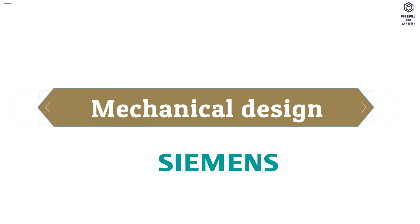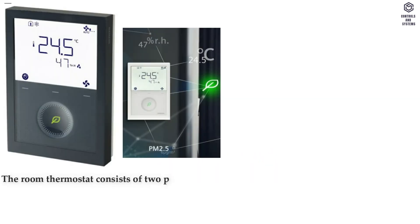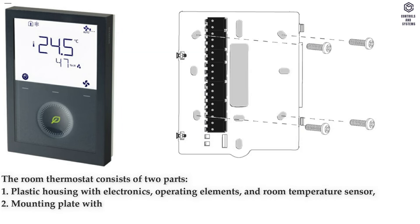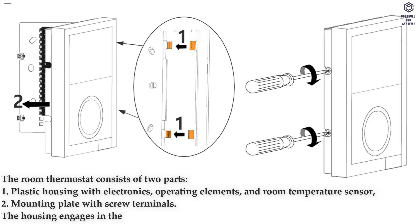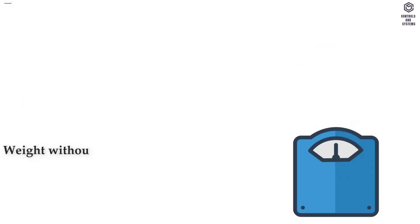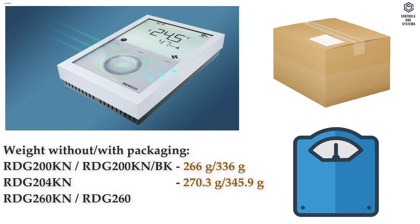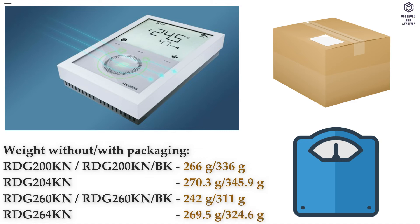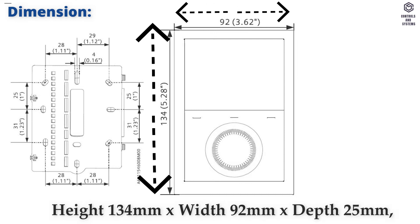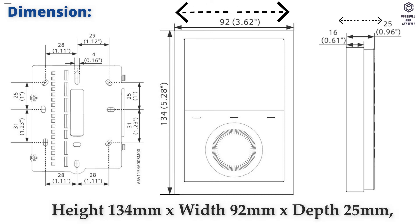Mechanical Design: The room thermostat consists of two parts — 1. Plastic housing with electronics, operating elements, and room temperature sensor; 2. Mounting plate with screw terminals. The housing engages in the mounting plate and is secured with two screws. Housing front color is RAL 90016 White and RAL 90011 Black. Dimensions: Height 134mm, Width 92mm, Depth 25mm.